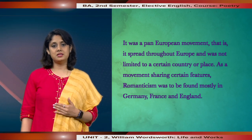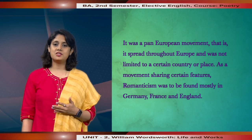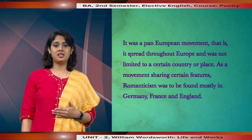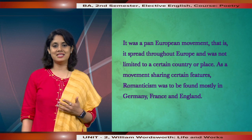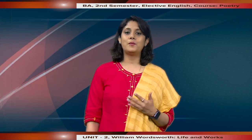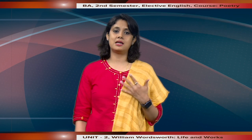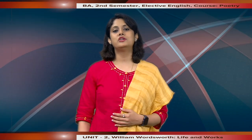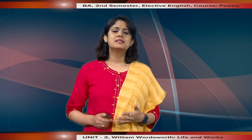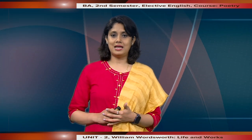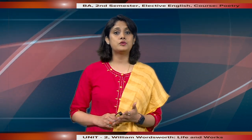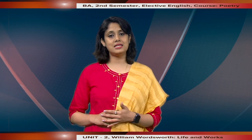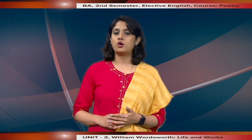As a movement sharing certain features, Romanticism was to be found mostly in Germany, France and England. Regarding the time, Romanticism originated towards the end of the 18th century and flourished during the first part of the 19th century. Significantly, Romanticism occurred as a result of and in reaction against the values, critical norms and standard literary practices of the preceding age, that is, the Augustan age.